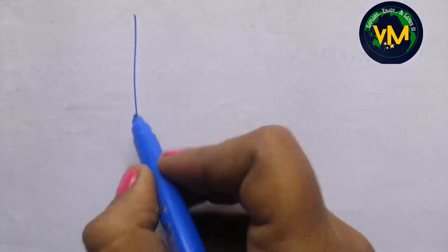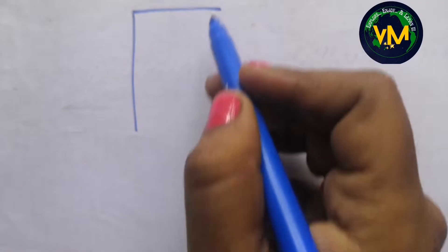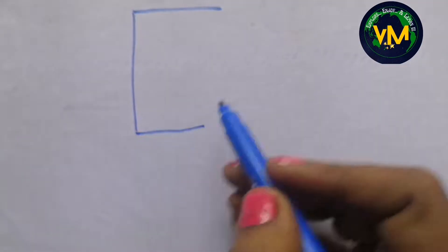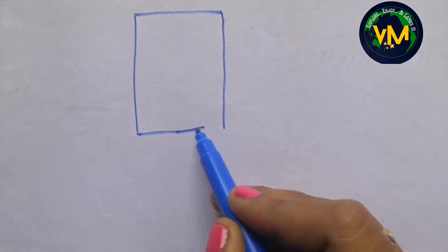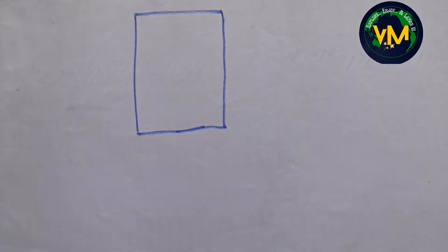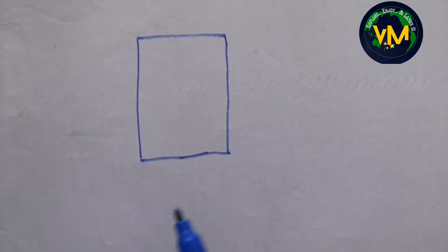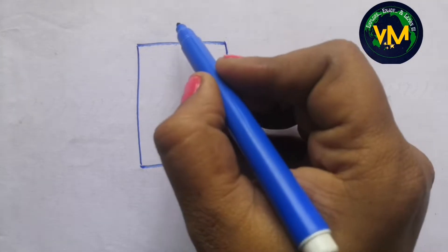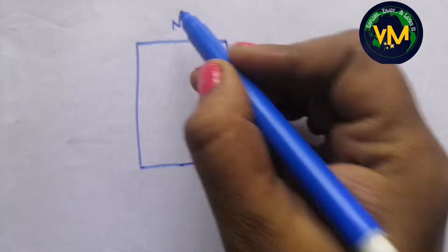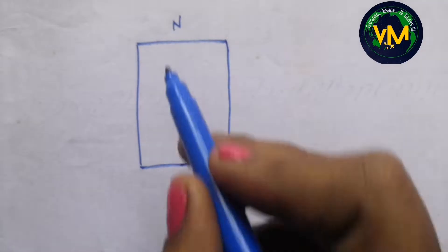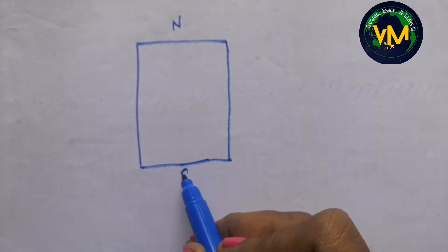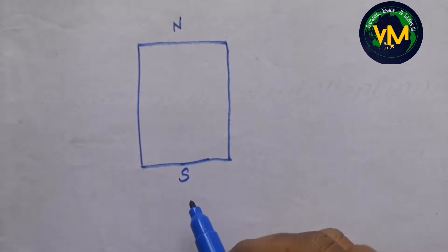If this is your topo map, we first write the direction. This will be north - always the top is north. This is south at the bottom.